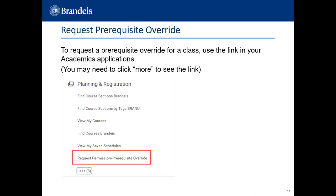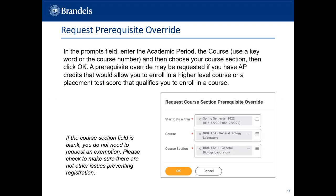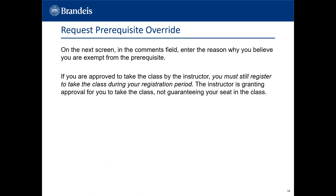The process to request a prerequisite override is similar — use the same link in your Academics tab. In the Prompts field, enter the academic period and the course by using a keyword or the course number, then choose your course section and click OK. A prerequisite override may be requested if you have AP credits that allow you to enroll in a higher-level course, or a placement test score that qualifies you for a course. If the course section field is blank, you do not need to request an exemption. On the next screen in the Comments field, enter the reason why you believe you are exempt from the prerequisite. If approved, you must still register to take the class — the instructor is only granting approval, not guaranteeing your seat.